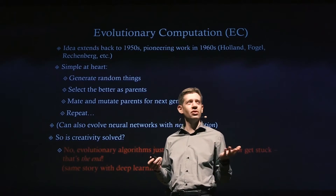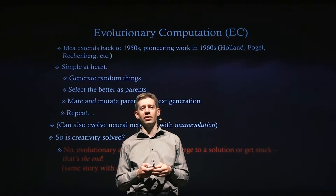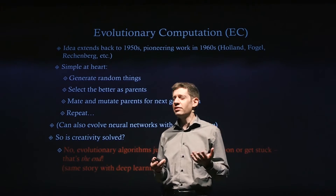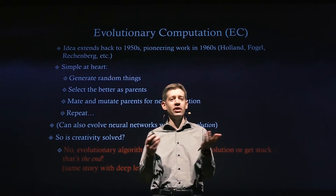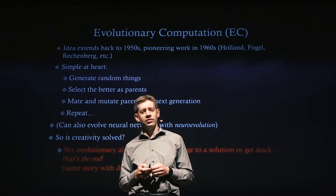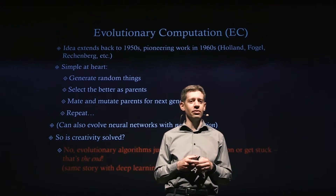Really, all I'm describing is just breeding — what you'd do if you're trying to breed better horses or dogs. This is the basic of an evolutionary algorithm. You can also evolve what are called neural networks, which is what people talk about in deep learning. That's called neuroevolution — you could actually breed smarter and smarter artificial brains. There are a lot of interesting things we can do with these algorithms.